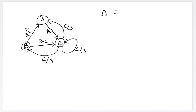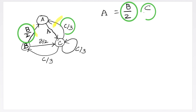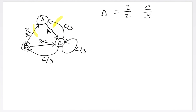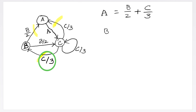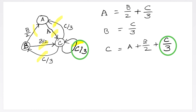We can now write equations. The importance of website A equals the summation of importance values from its incoming links — B/2 and C/3 — so A = B/2 + C/3. Website B has only one incoming link, so B equals whatever importance value it receives from that link. Website C has three incoming links — one from A, one from B, and one from itself — giving C = A + B/2 + C/3.